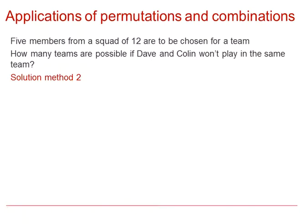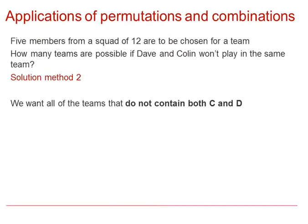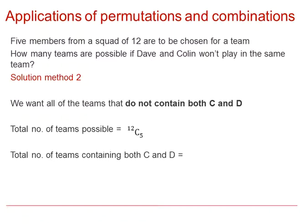The second method is to look at the teams that do not contain both Colin and Dave. The total number of teams possible from a squad of twelve choosing five is twelve choose five, and then we subtract the total number of teams containing both of them. If you've chosen both of them, there are ten squad members left to choose from, and you're only choosing three more players, so that would be ten choose three. You subtract one from the other, and you find the same answer of 672.